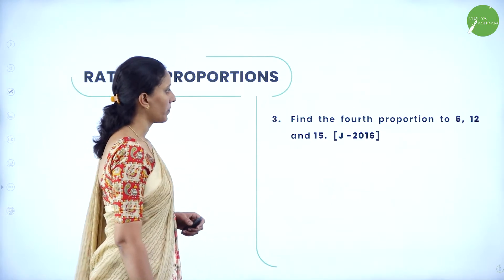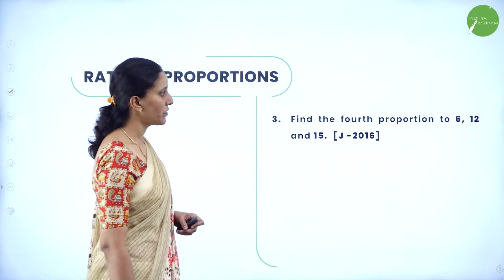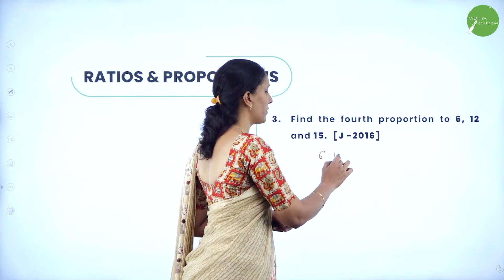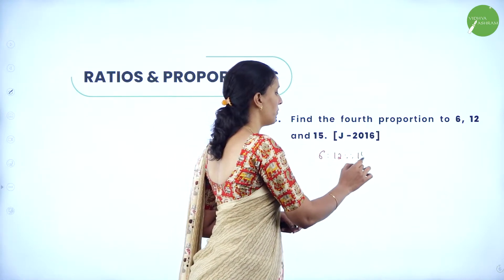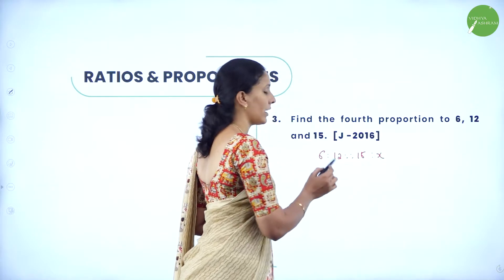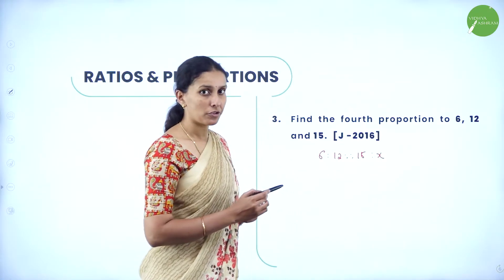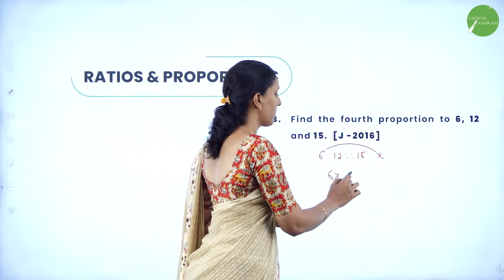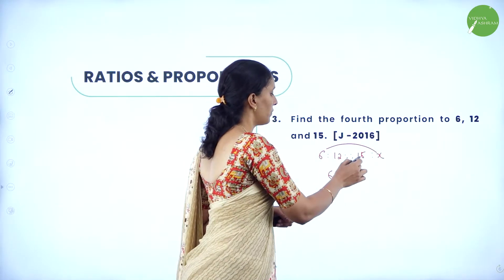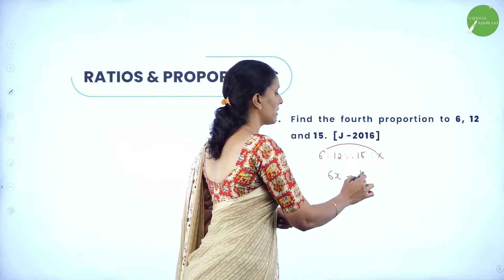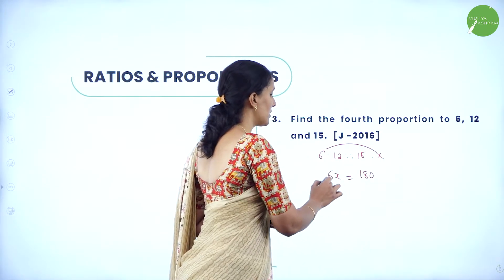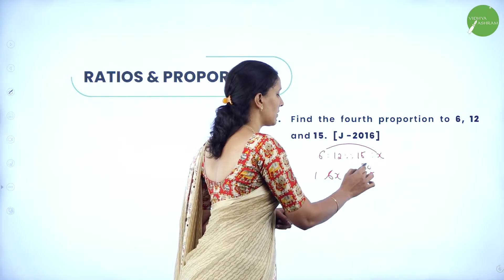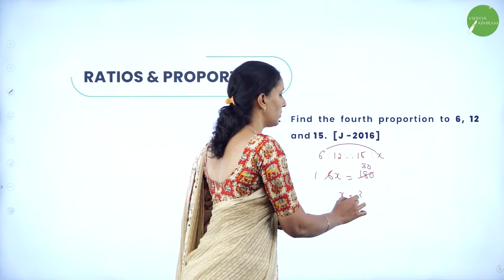Next: find the fourth proportional of 6, 12, and 15. We write it in the form 6, 12, 15, and x. Using product of means equals product of extremes, we get 6x = 15 × 12 = 180. So x = 30.